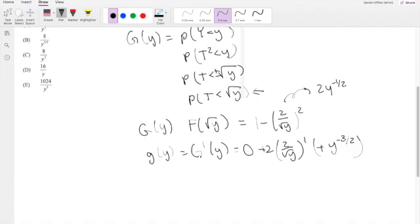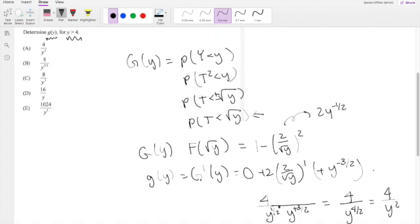So the two negatives make a positive. So you get 4 over root Y times Y to the negative 3/2. I'm going to rephrase the root Y here as Y to the 1/2. And if it's in the denominator, it's positive here. So you get 4 over, adding these up, you get Y to the 4/2, which is equal to 4 over Y squared, which is our answer A.